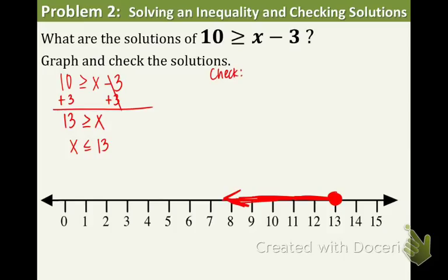First of all, we're going to check the endpoint. The endpoint is 13. So let's plug 13 in for the equation. I'm taking the inequality from above and just putting an equal sign instead of a greater than or equal to. Plugging in the 13, which is the endpoint. What's 13 minus 3? 10. So it works. Endpoint is correct.